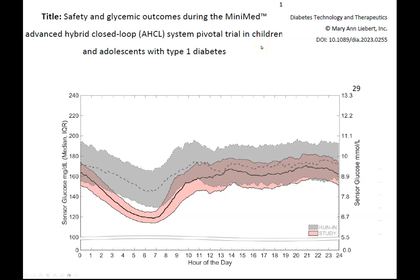From the latest pivotal trial data — just like every other system, these systems really excel overnight. You've got no exercise, no food, just basal insulin and glucose coming from the liver, and you get excellent time in range overnight. During the day, with sporadic activity and carbohydrates, you do get improved control compared to standard pumps and sensors without automated insulin delivery, but the difference isn't as stark as overnight — because current insulins aren't fast enough to cope with daily shifts from carbs and exercise. But it's still a huge difference in glycemic profile across 24 hours, and this is why we love automated insulin delivery systems.